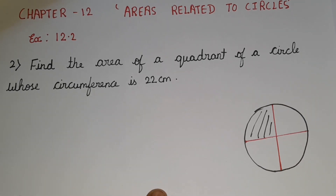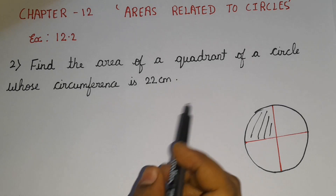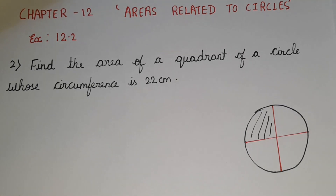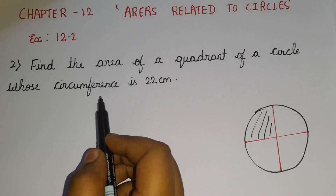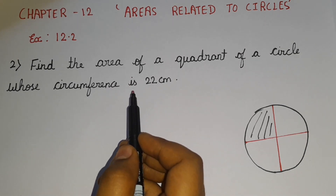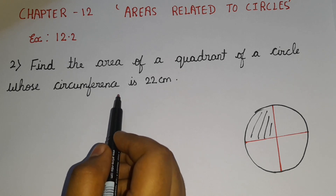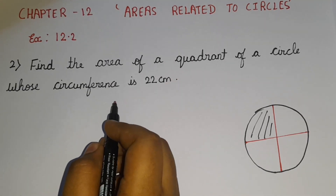We are supposed to find the area of a quadrant of a circle whose circumference is 22 centimetres. So here they mentioned a value — circumference is 22 centimetres. This is a great clue for us to find the area of a quadrant.